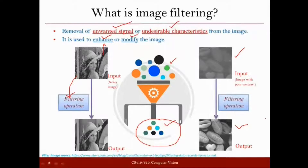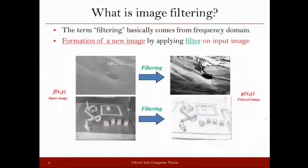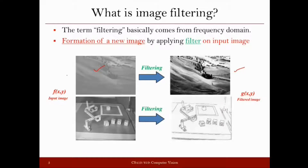In both these examples, there were some problems with the images and through filtering we want to suppress those problems and get a clean image. There is another example here where the input image also has the problem of poor contrast, and you want to enhance the image with respect to contrast so that whatever objects you have in the image are clearly visible. Again, this image has some issues and we want to overcome them through filtering.